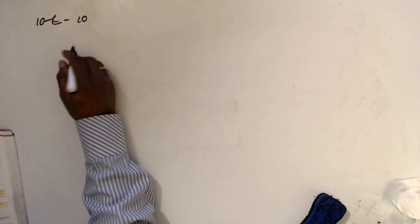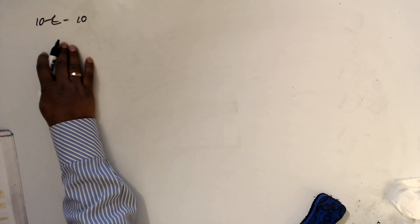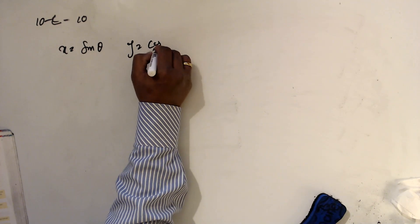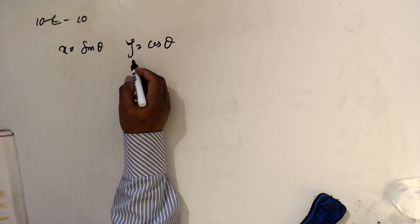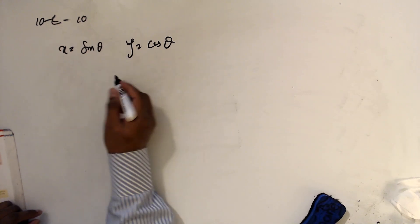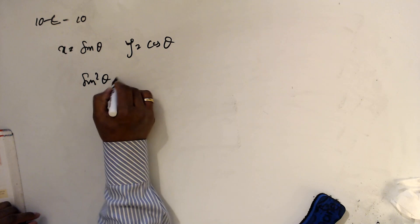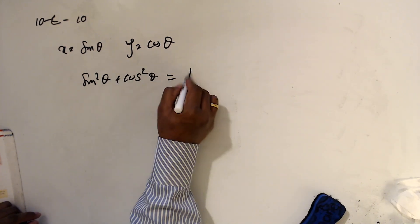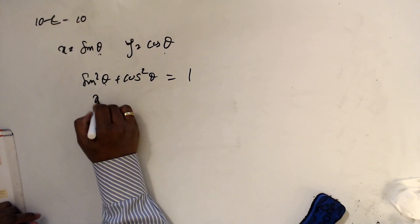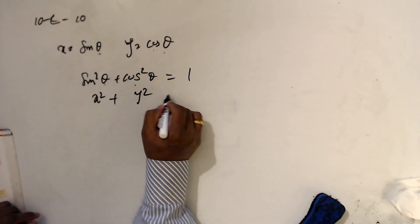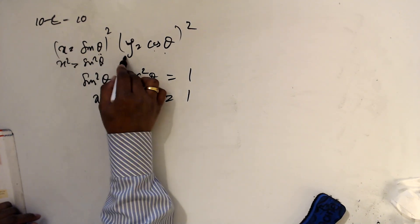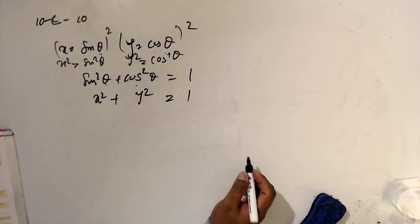Number ten — elimination. Let x = sin θ and y = cos θ. We need to eliminate θ and form a single expression. From the Pythagorean identity, sin²θ + cos²θ = 1, so x² + y² = 1. We square the substitutions: x² = sin²θ and y² = cos²θ, then substitute.